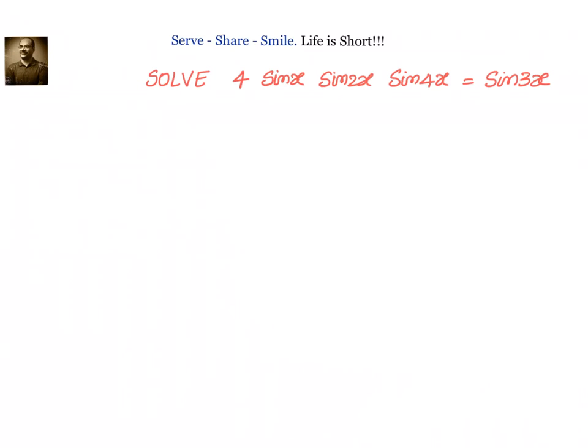Let us look at this problem related to trigonometric equations. We have been given that 4 sin x times sin 2x times sin 4x equals sin 3x. We have to give the general solution for this trigonometric equation.